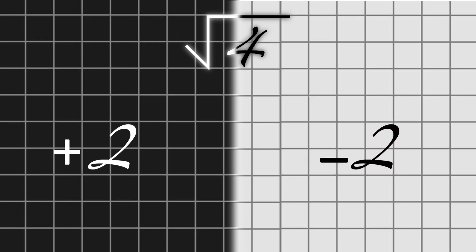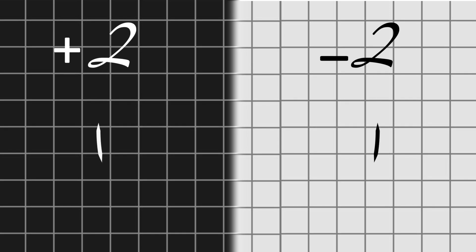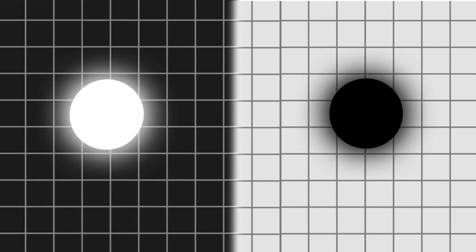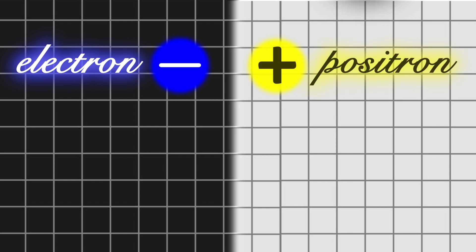His equation suggested that there was a negative energy. To explain this, he predicted a mirror opposite particle, antimatter. Every particle of matter has an antimatter counterpart with the same mass but opposite charge. For example, the charge of an electron is negative, but the charge of its antimatter counterpart is positive, which is called a positron.